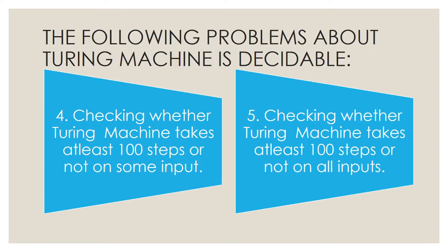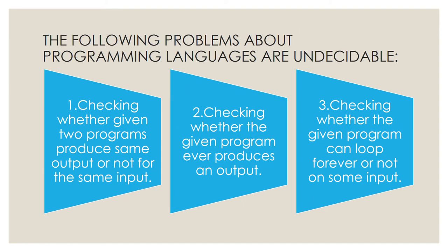Moving to programming languages, the following problems are undecidable. First is checking whether two given programs produce the same output or not for the same input. Second is checking whether the given program ever produces an output. Third is checking whether the given program can loop forever or not on some input.